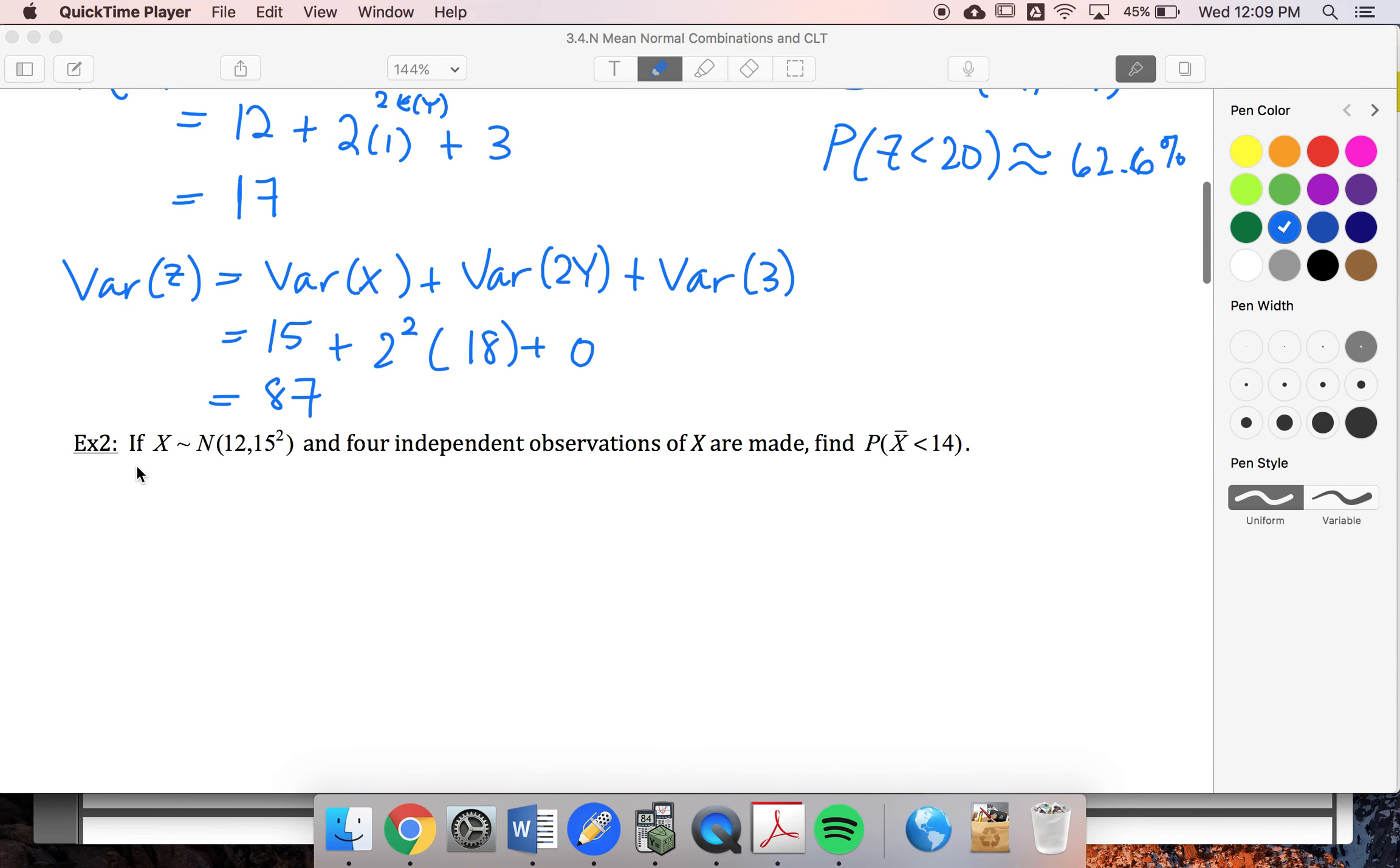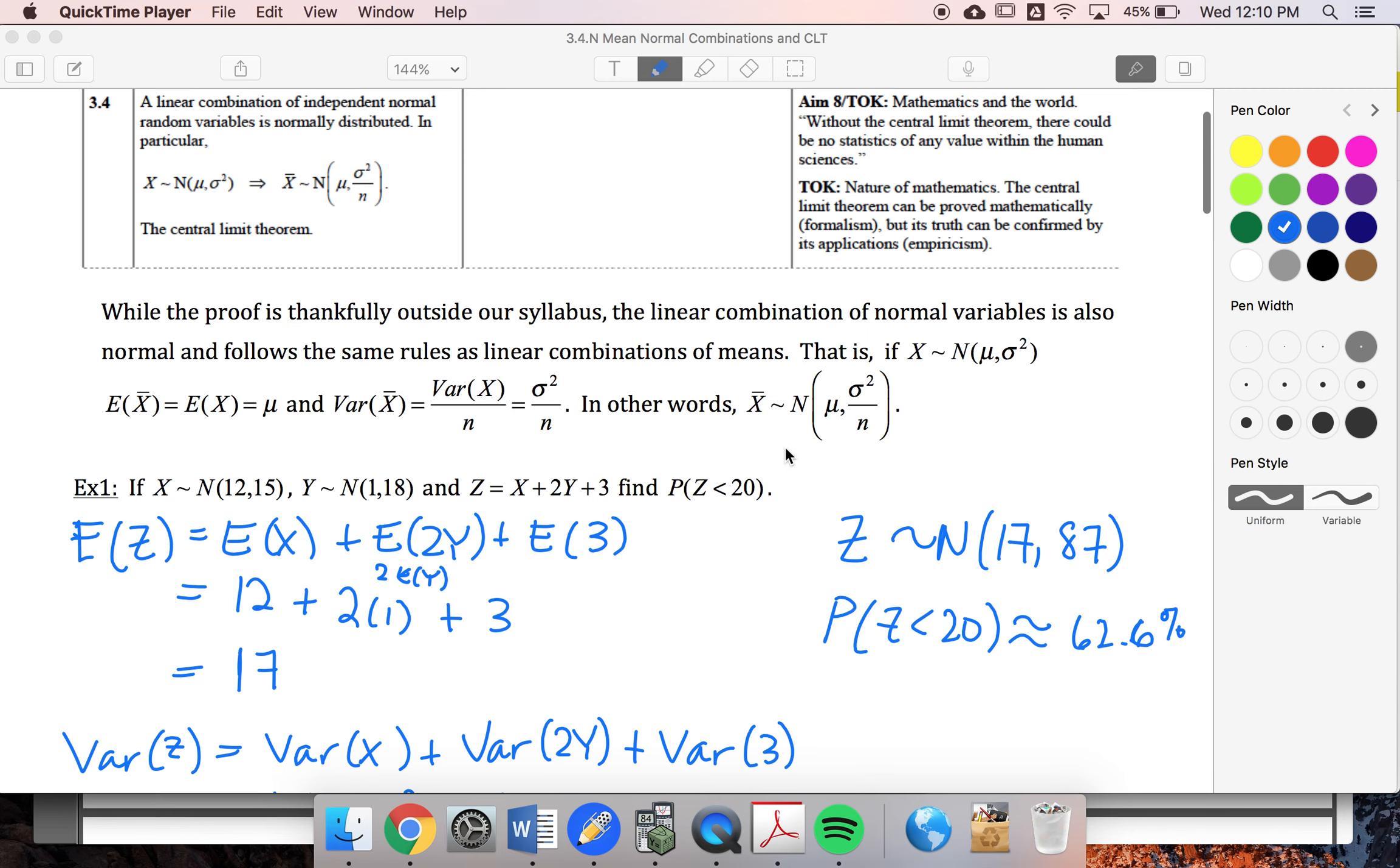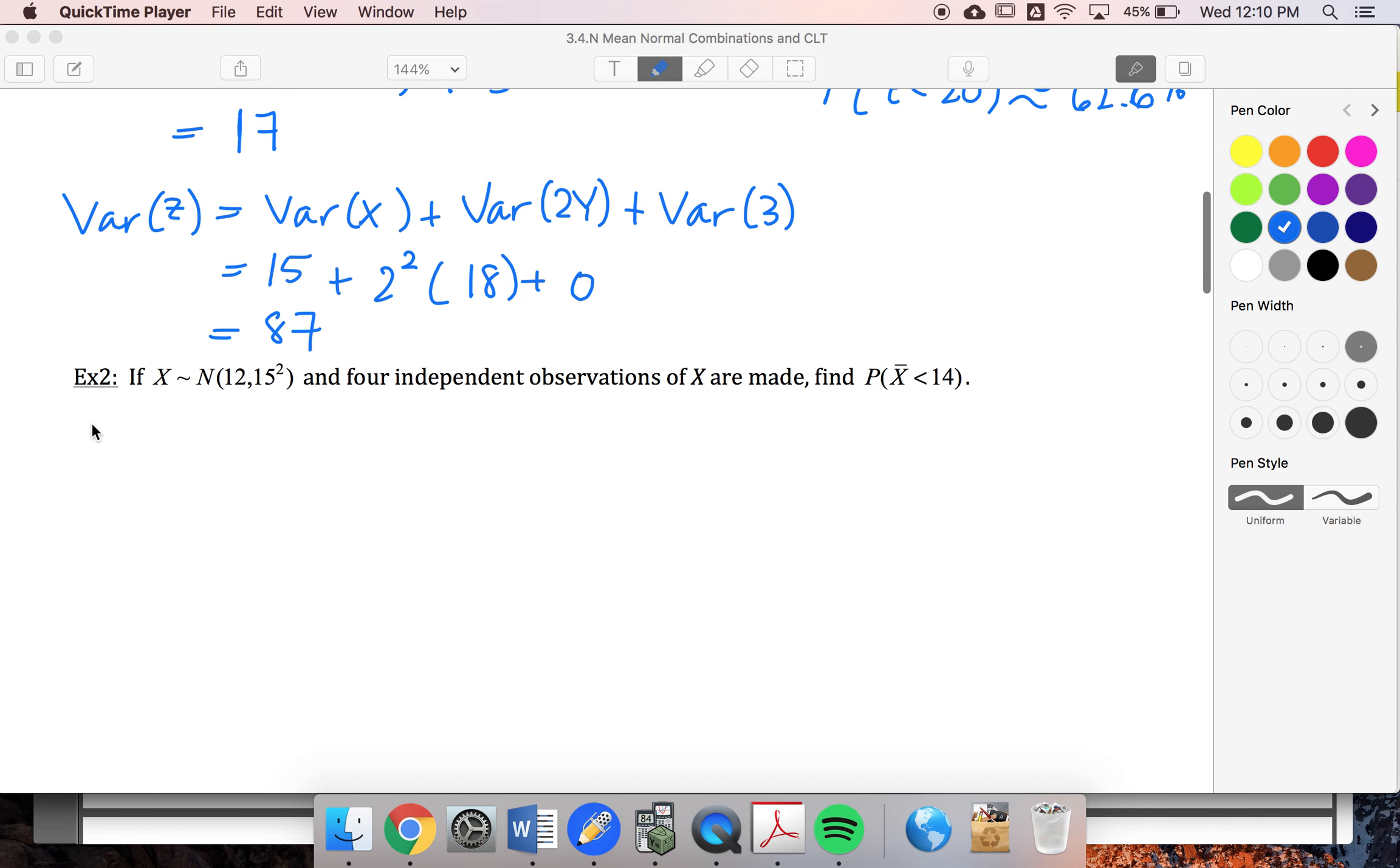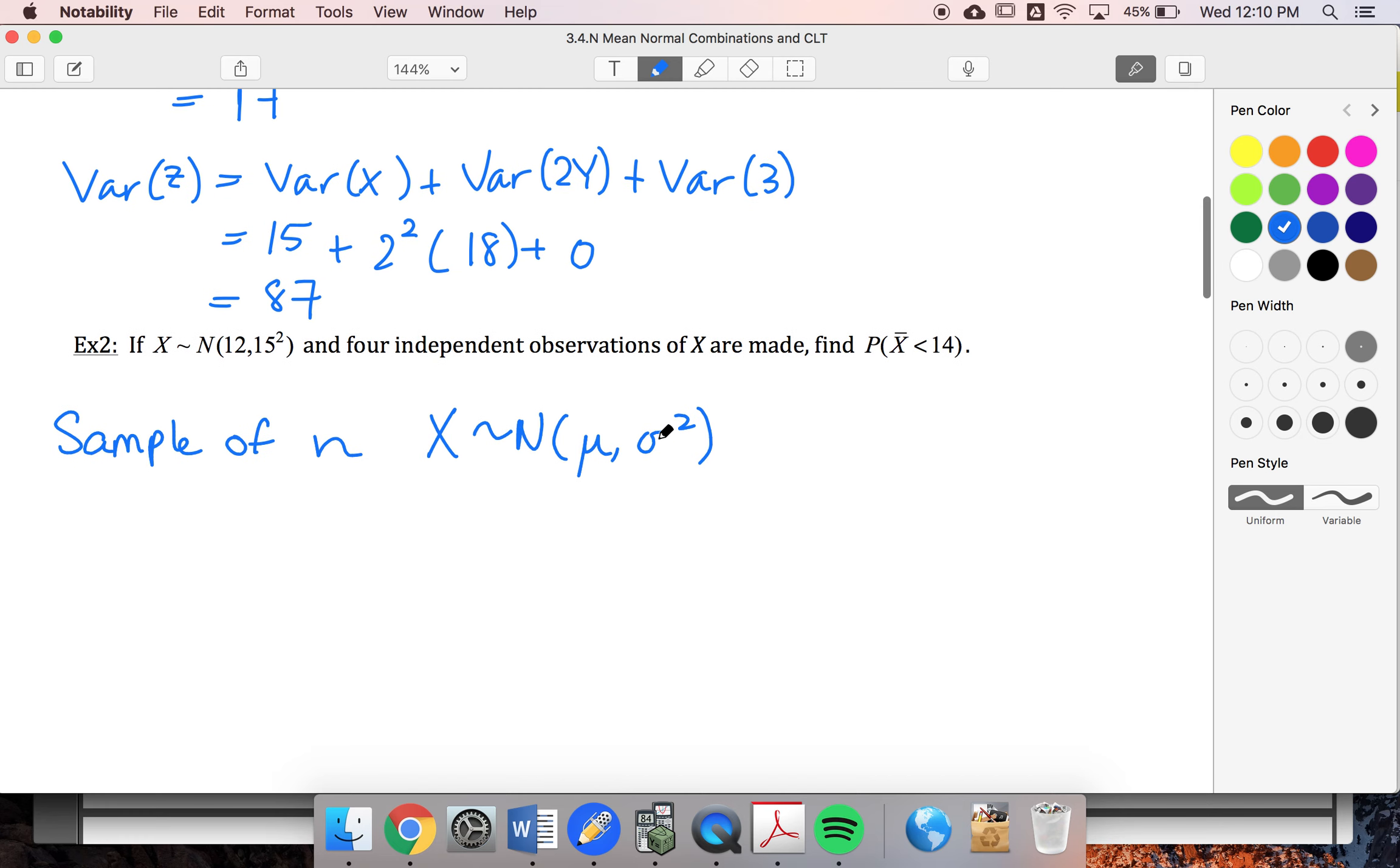So I'm going to come back to this example, but let's look at where this formula is coming from. Let's start by just looking at a linear combination of, so let's say we have a sample of n x variables that are normally distributed with a mean of mu and a standard deviation of sigma squared. Sorry, not a standard deviation, variance.